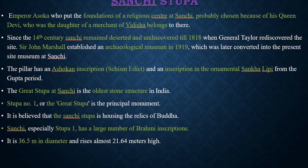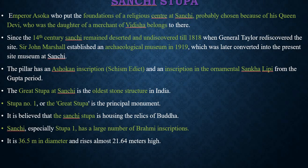Stupa No. 1, or the Great Stupa, is the principal monument at Sanchi. It is believed to house the relics of Buddha. Sanchi, especially Stupa 1, has a large number of Brahmi inscriptions. It is 36.5 meters in diameter and rises almost 21.64 meters high. Stupa 1 is the oldest stone structure in India and is the finest example of a fully carved Vedika with relief pillars. In the 3rd century BCE, the railings were wooden; in the 2nd century BCE they were converted to stone. Today the monument is large — in the 2nd century BCE it was two times smaller.